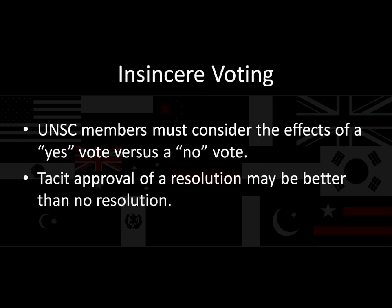Let's talk about insincere voting. United Nations Security Council members must consider the effects of a yes vote versus a no vote — they can't do this in a vacuum; they have to think about the consequences. And in fact, tacit approval of a resolution may be better than no resolution. To abstain — to essentially give tacit approval by refusing to veto — that might be better than vetoing and ensuring that no resolution occurs.